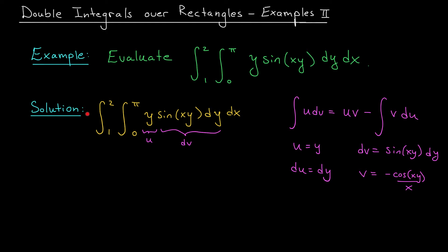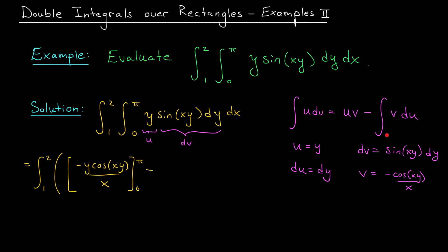Leaving the outer integral from 1 to 2 alone, I apply the integration by parts formula to the inner integral. I get uv, which is y times minus cos(xy) over x, evaluated from 0 to pi, minus the integral of v du. Since v is minus cos(xy) over x, I actually add the integral of cos(xy) over x dy. Outside all of this, I still have dx from the outer integral.